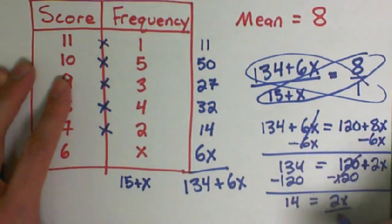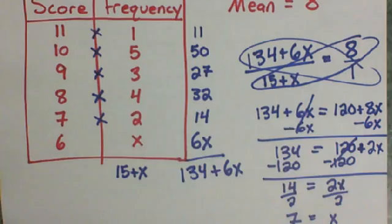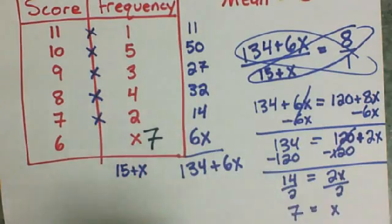134 minus 120 leaves 14. I'm going to divide by the 2. 14 divided by 2 is 7. So that tells me that there were seven sixes in there.